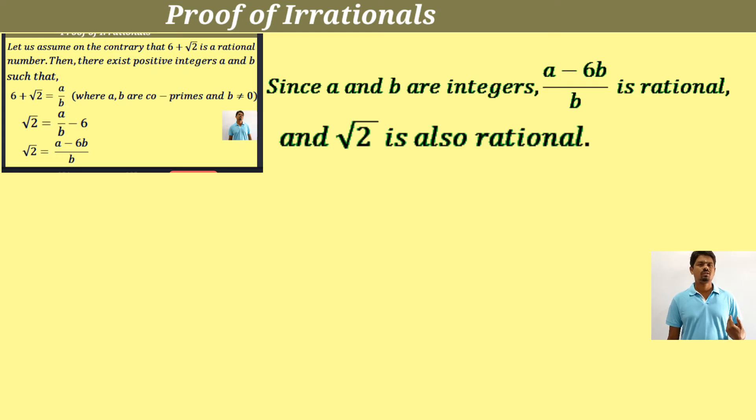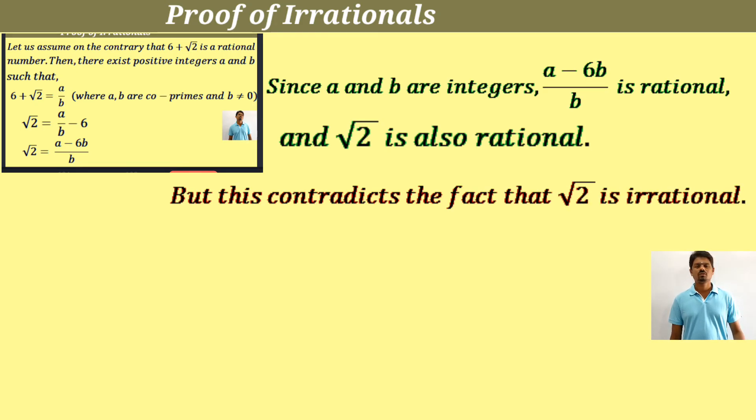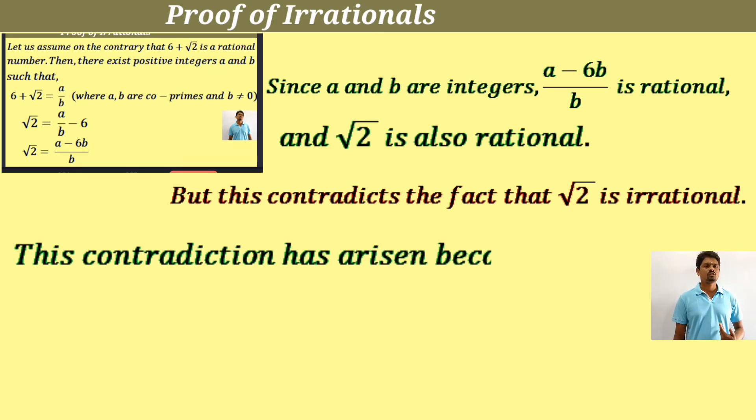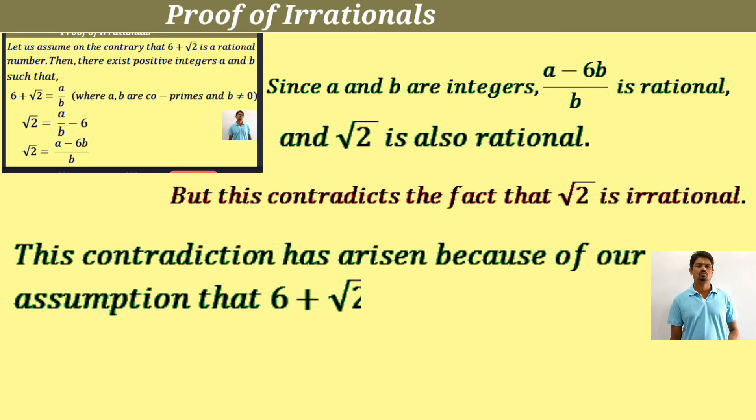Root 2 is not rational, but here we got root 2 is rational. But this contradicts the fact that root 2 is irrational. This contradiction has arisen because of our assumption, because of our assumption that 6 plus root 2 is rational.